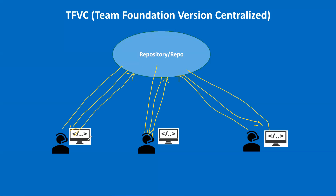Another drawback: if two developers are both working on the same file and each commits their changes to the repository, they will only discover any conflicts when the build happens. Those are the kinds of drawbacks you face when using a centralized version control system.